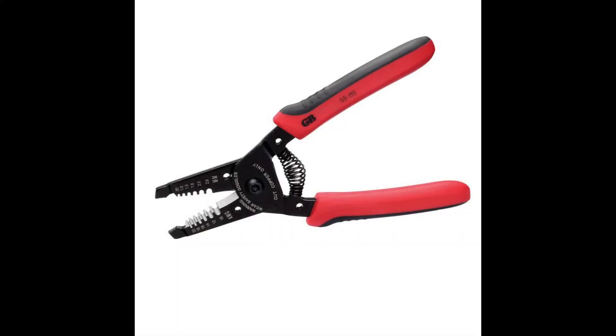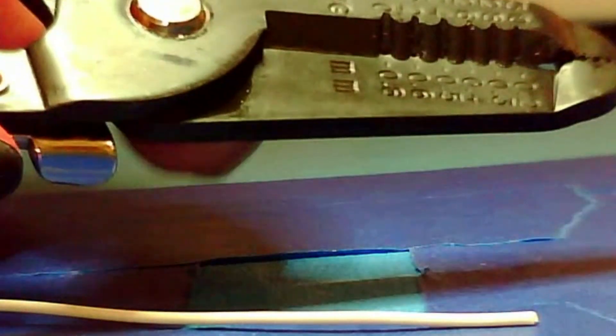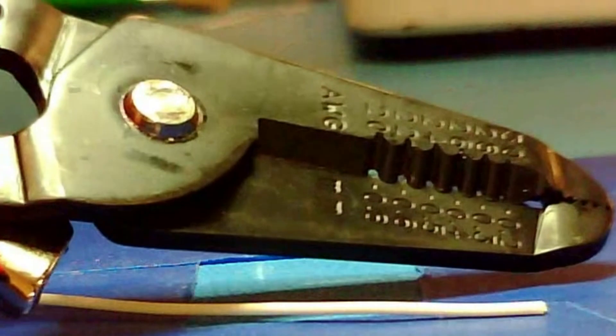The second style of wire strippers that will be demonstrated are the pliers or manual style wire strippers. The demonstration device has a safety lock which must be disengaged to open the jaws of the device.